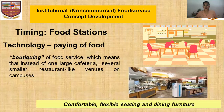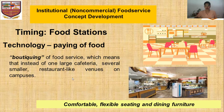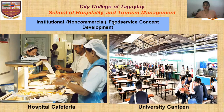In an institutional food service facility, there can be food stations as well. They can have what is called boutiquing of food service, which means that instead of one large cafeteria, several smaller restaurant-like venues are on their campuses. Examples of institutional food service facilities include the hospital cafeteria and the university cafeteria. For the hospital cafeteria, the main focus of the business is patient care and medications, but serving food to patients and other hospital staff is also necessary.